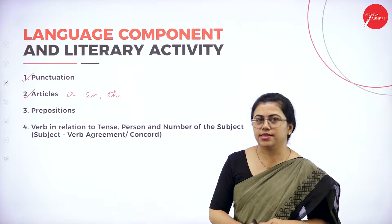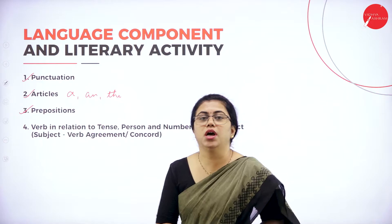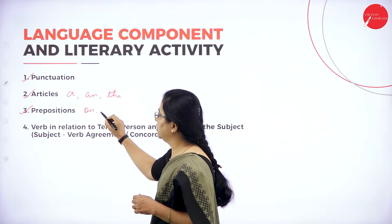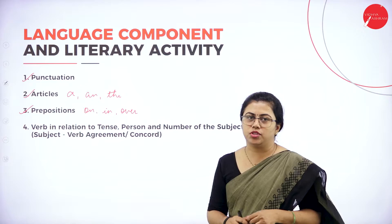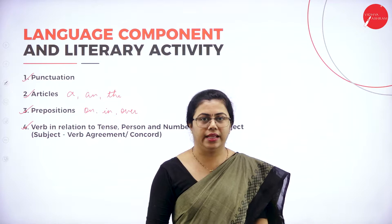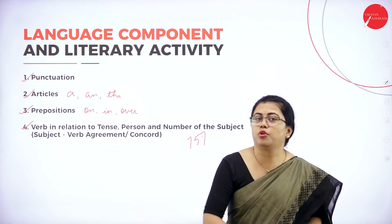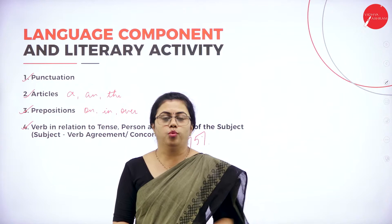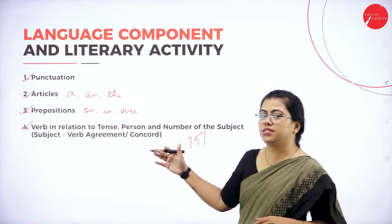Then we have prepositions — a part of speech that tells us about the relationship of the subject in connection to the other words in the sentence. Examples are: on, in, over. Different types of prepositions we'll also be learning in detail. Then the most important topic is subject-verb agreement, which constitutes almost 75% of errors. If you get subject and verb agreement right, understand and use it correctly in your conversation or communication, you will get rid of almost 75% of your errors. So subject-verb agreement, or subject-verb concord, is very, very important.